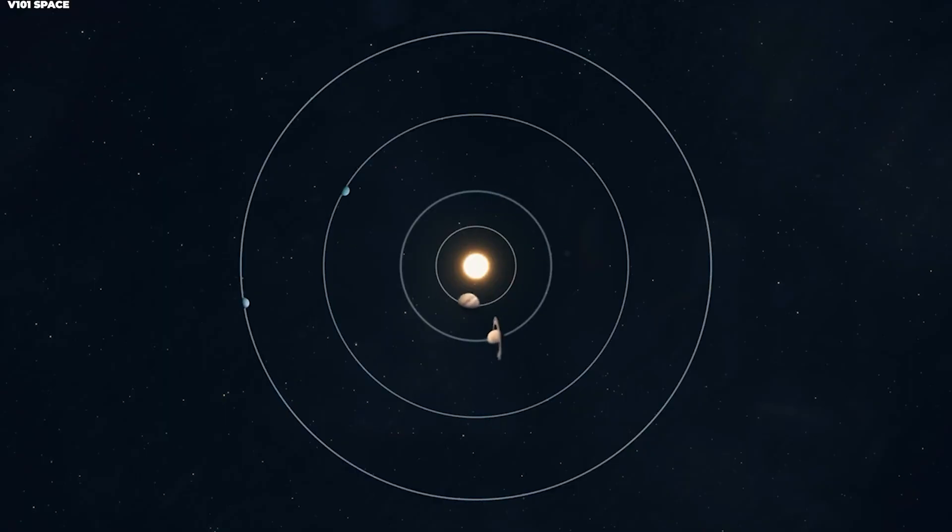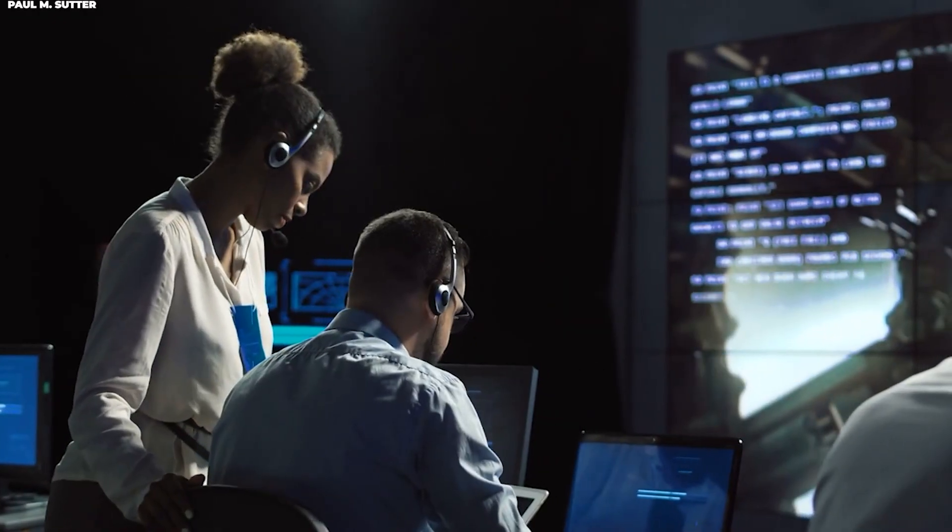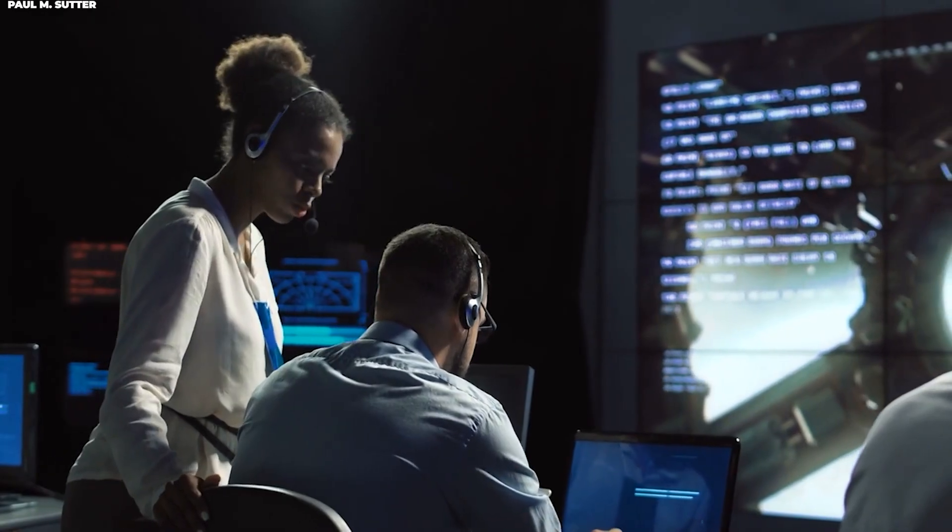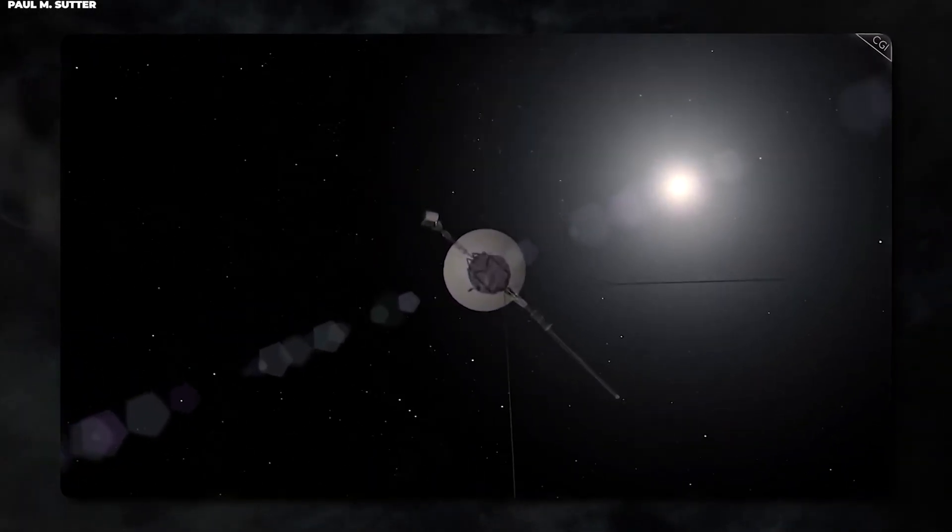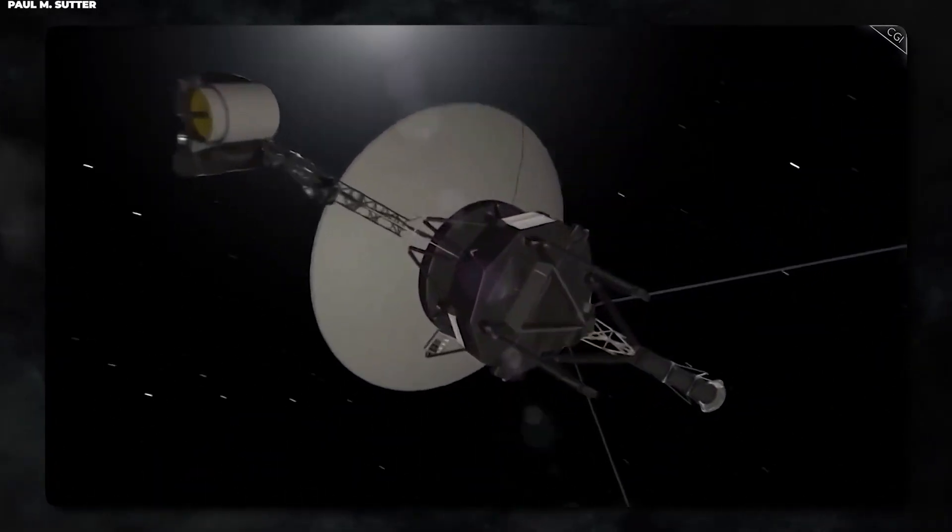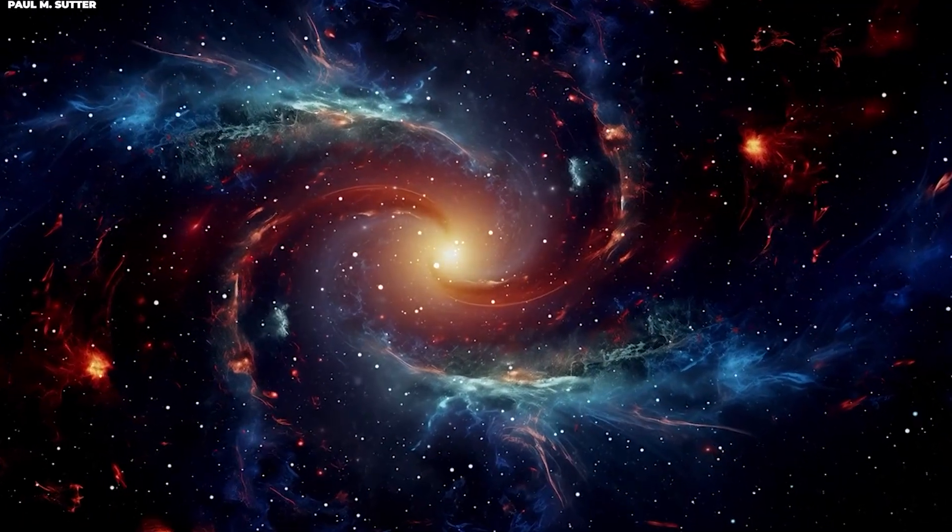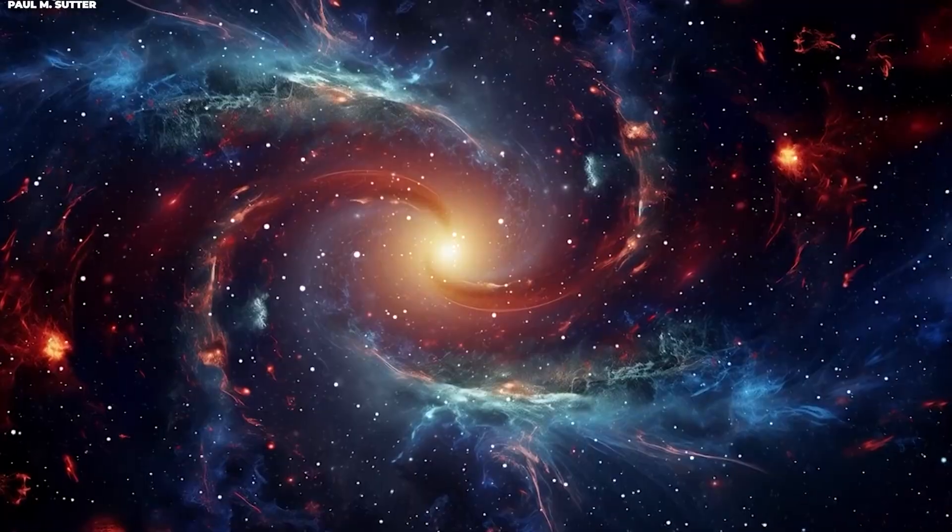Now here's where our story gets really interesting. In early 2024, scientists made an incredible realization. The trajectory of 3i-ATLAS and the position of Voyager 1 were going to bring them relatively close together in cosmic terms.